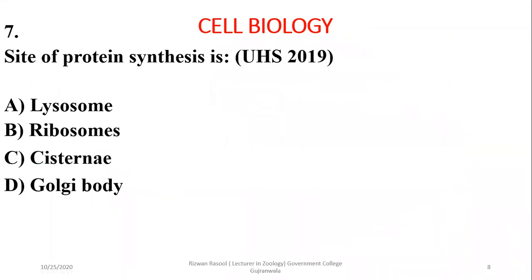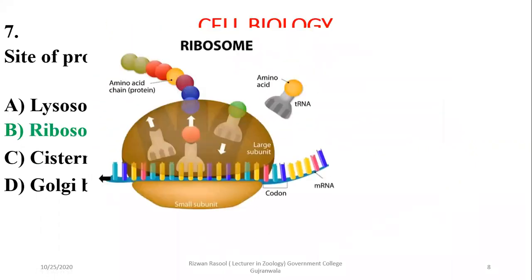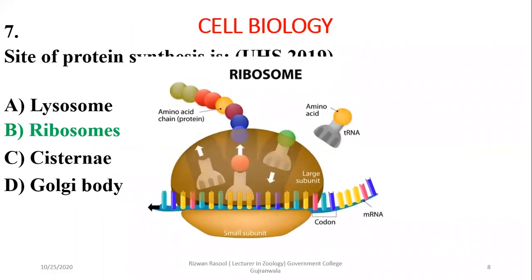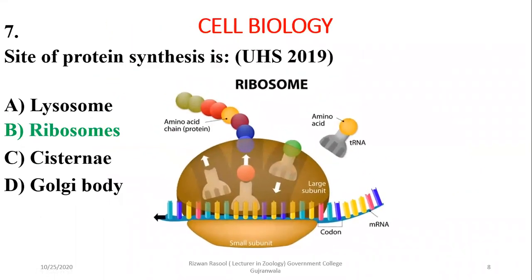Question 7: The site of protein synthesis is the cytoplasm; more specifically it is the ribosomes, which are involved in synthesis of protein by assembly of amino acids, also involving other types of RNAs.